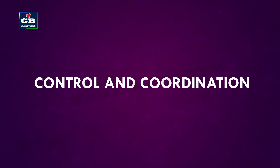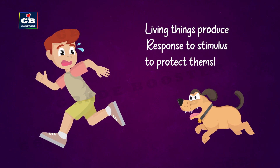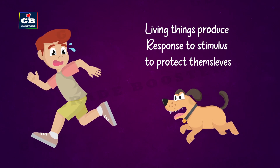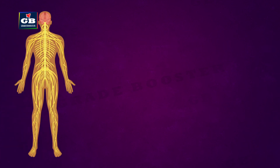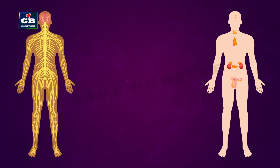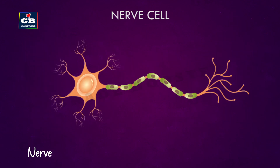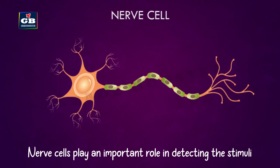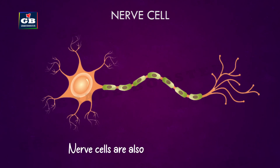Control and coordination: living things produce responses to stimuli to protect themselves. The nervous system and hormonal systems help organisms produce responses to stimuli. Nerve cells play an important role in detecting stimuli.